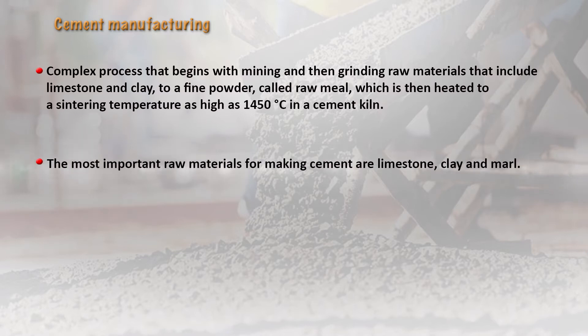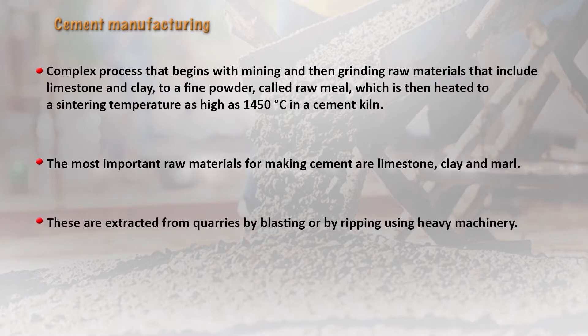The raw materials used for making cement normally include limestone, clay, and marl. These are extracted from quarries by blasting or ripping using heavy machinery. In India, limestone reserves are quite abundant — found in Meghalaya and certain southern regions as well. There are many good companies manufacturing cement in the south of India.